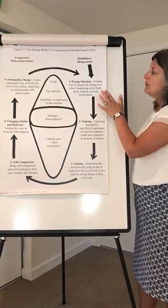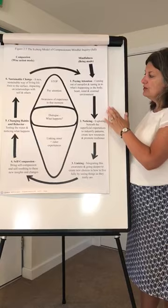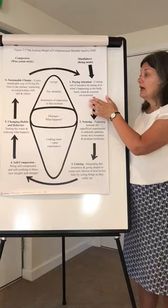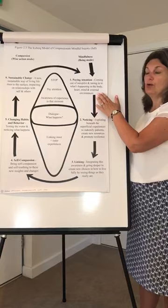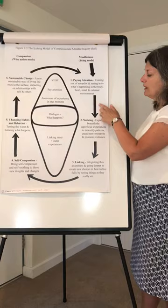Once we're aware and we've taught people firstly how to become aware, but also to be aware that they're aware, we need to help them develop more skills around that. This is very much where we're switching on their parasympathetic nervous system. Perhaps they're using apps, and it's really helpful to be calm and quiet in the moment. But if that's all that they did, they'd go back to everyday life and the benefits would just be lost.